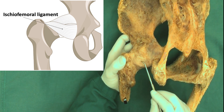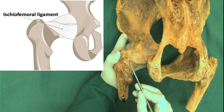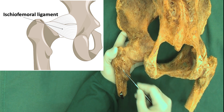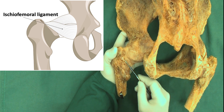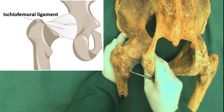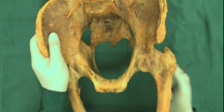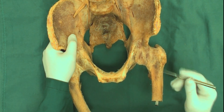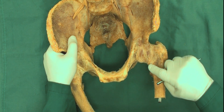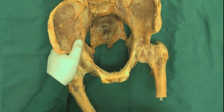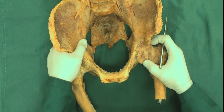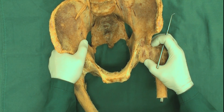On the posterior side, the joint capsule covers the neck above the intertrochanteric crest, then this part of the neck is exposed — which has clinical application when it comes to the blood supply of the head. On the anterior side, the joint capsule comes all the way down and attaches to the intertrochanteric line, and on the hip side it attaches around the acetabulum.